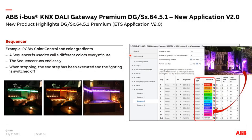Another sequencer example is color control with color gradients — for example in a spa with RGBW LED strips, where the color changes automatically from green to purple to blue to red. We create sequencer 3, select group 5 which is device type 8 RGBW, and click the color picker to enter the desired colors step by step: starting with red, then orange after one minute, then yellow, light green, dark green, blue, purple, and so on. With cycle count zero it runs endlessly, and when stopped it jumps to the end step and switches off all lights in group 5.